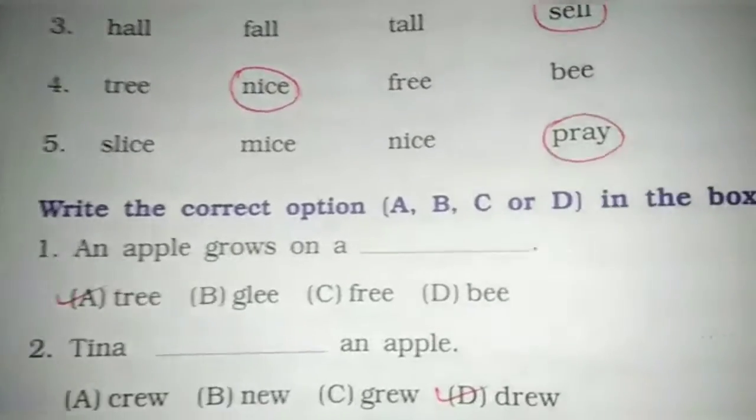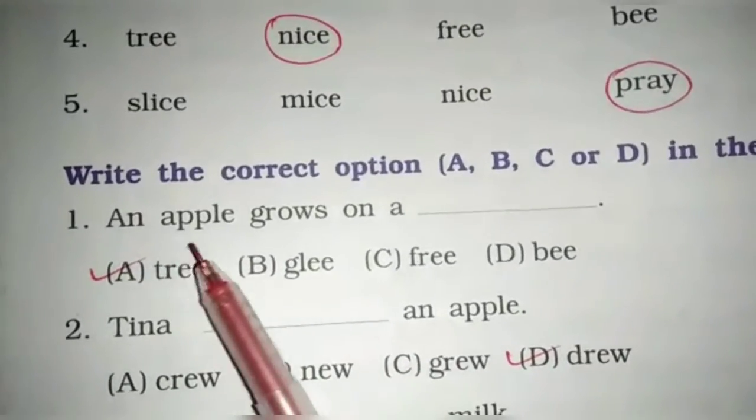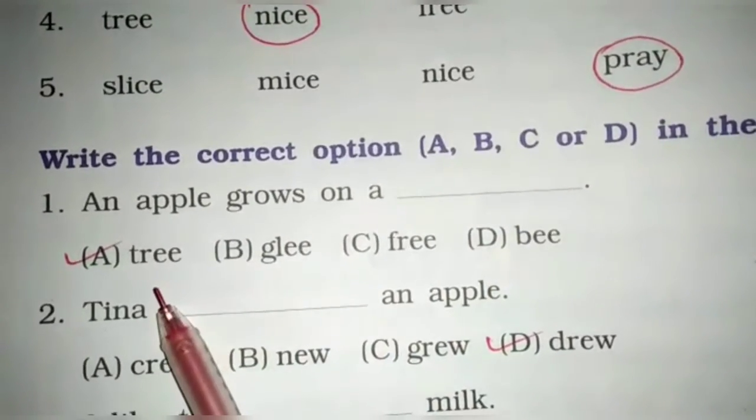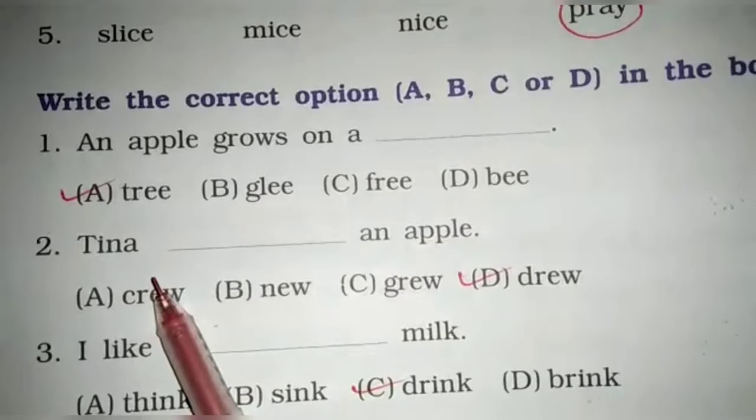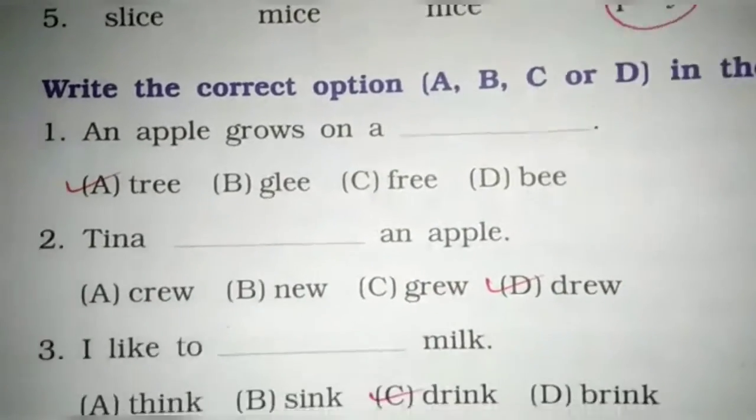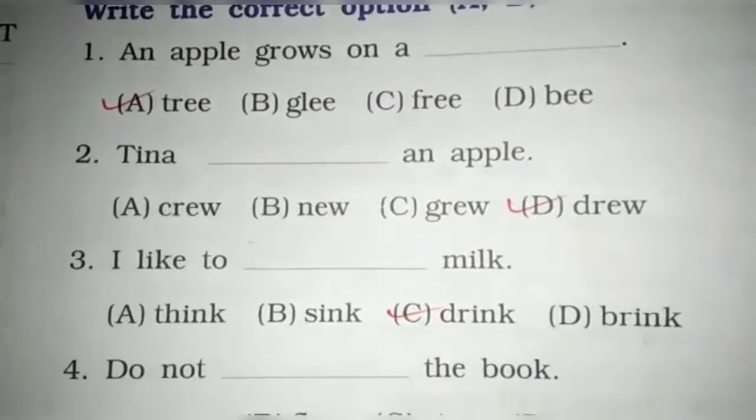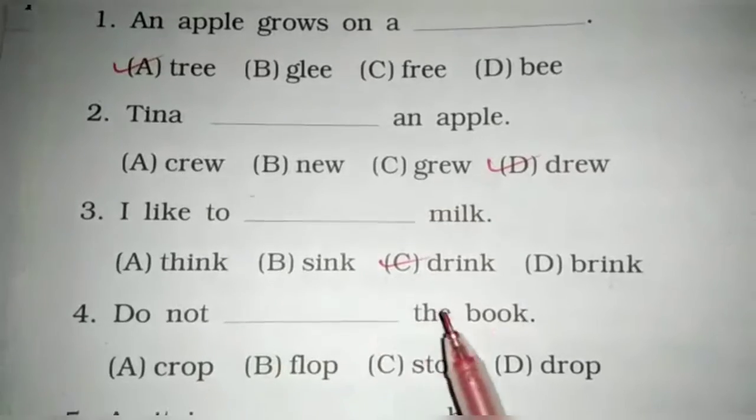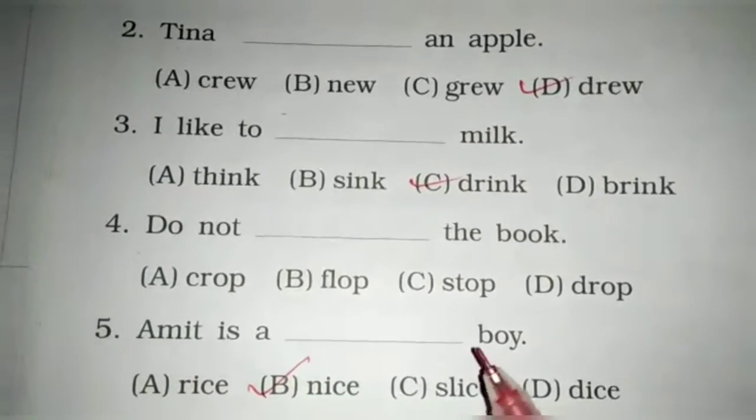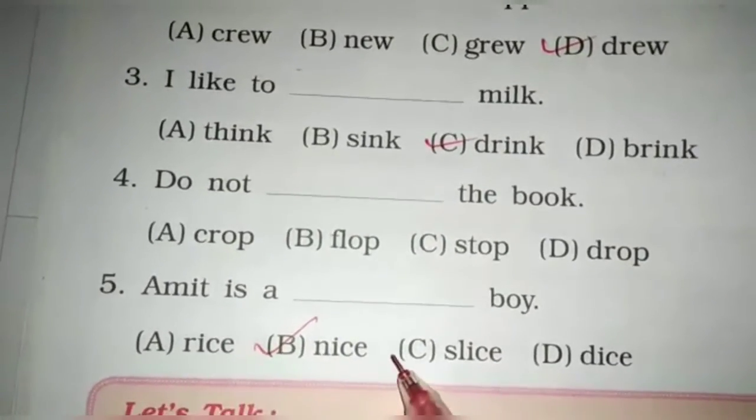Next, write the correct option A, B, C or D in the box. An apple grows on a dash. Apple कहाँ grows होता है? Yes, on a tree. Tina dash an apple. Tina ने क्या drop किया? Apple. So grew. I like to dash milk. I like to drink. Then do not crop the book. Amit is a dash boy. Amit is a nice boy.